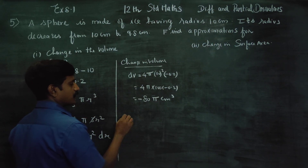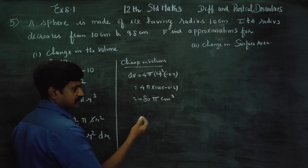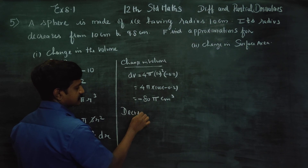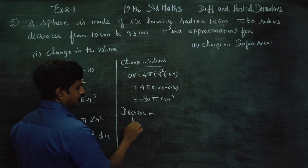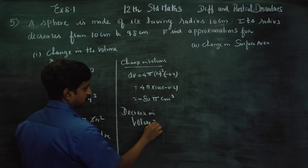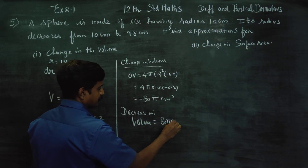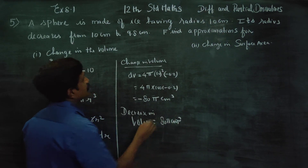Since the result is negative, we can declare this as a decrease in volume. Therefore, the decrease in volume is 80π centimeter cube.